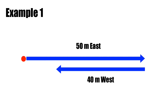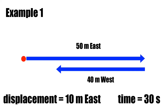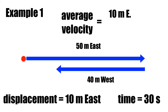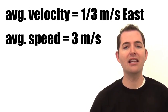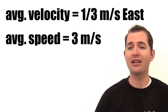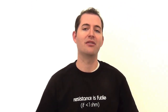Now looking at displacement and velocity for that same motion, the displacement was 10 meters east. When calculating velocity, we take the displacement divided by the total time: 10 meters east divided by 30 seconds. This gives us a velocity of 0.33 repeating meters per second east. We can see there's a big difference between these numbers, highlighting the difference between average speed and velocity of an object.